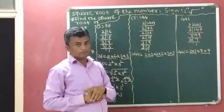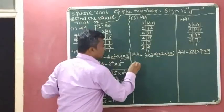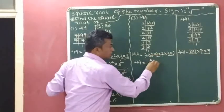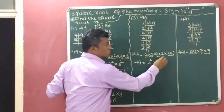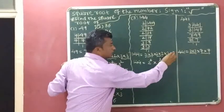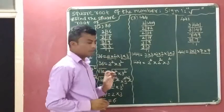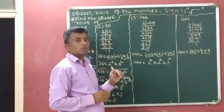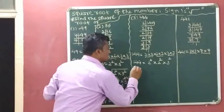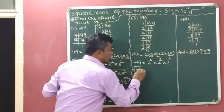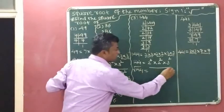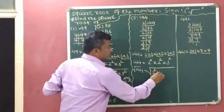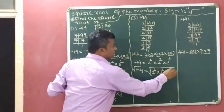So 144 = 2 × 2 × 2 × 2 × 3 × 3, which we write as 2 squared × 2 squared × 3 squared. Now we want to find the square root of 144, so we apply the square root sign on both sides: square root of 144 equals square root of 2 squared times 2 squared times 3 squared.